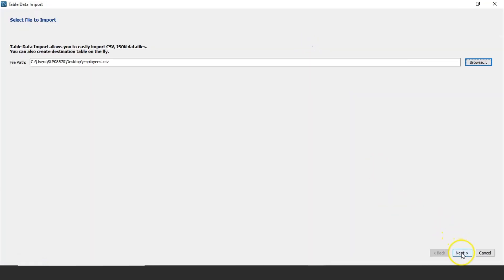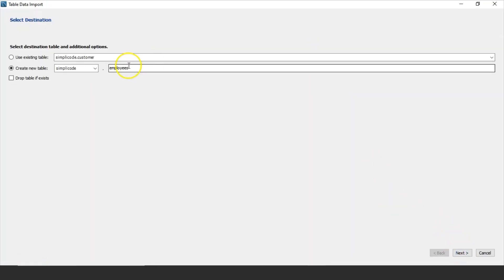Now once you select the file, click the next button here. Now it will ask if to name the table whether to use existing table or to create a new table. So I'm just taking a new table here, employees1, and click on next.